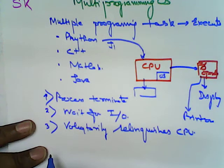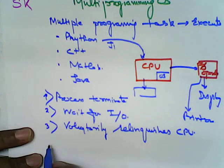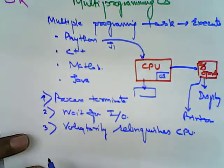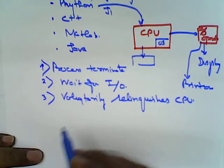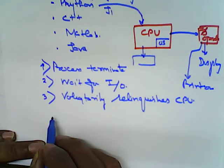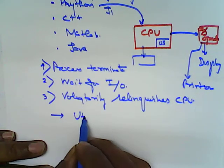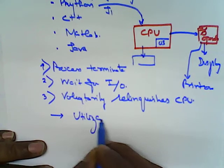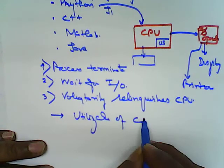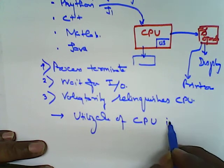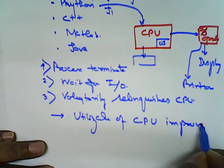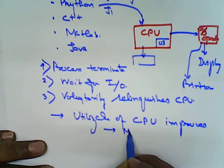So, in the multiprogramming, now the multiple programming is a process just like a multitasking, but the important thing is that the utilization of CPU improves. That means, it gives a maximum CPU utilization.